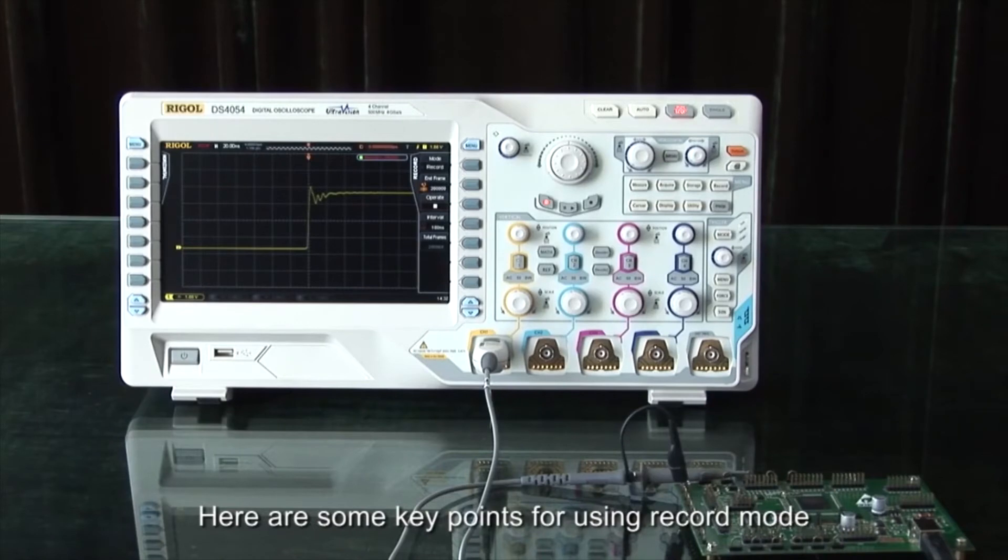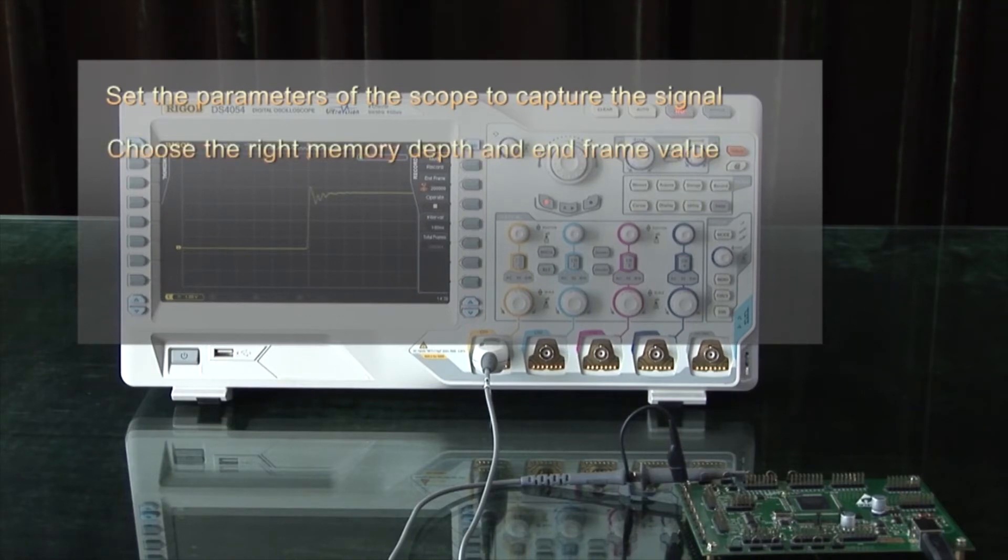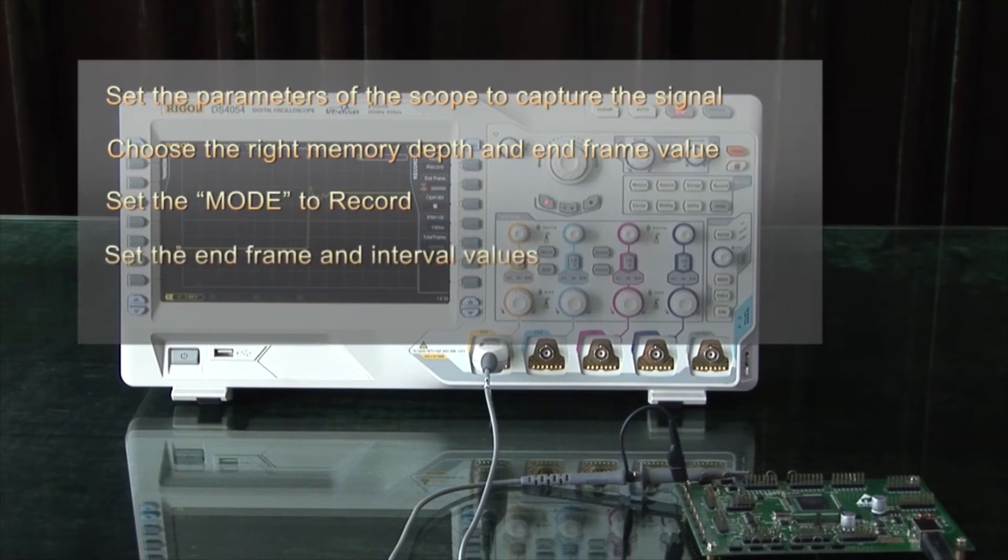Here are some key points for using record mode. You want to set some of the parameters of the scope so that you capture the signal. Choose the right memory depth and end frame value. Set the mode to record, set the end frame and interval, and then start recording.